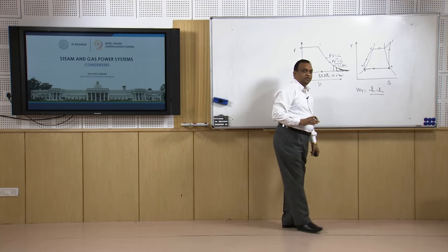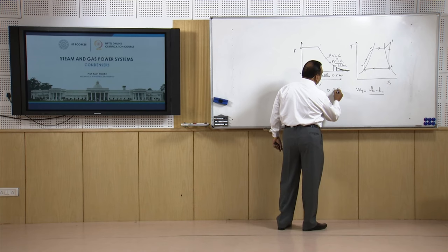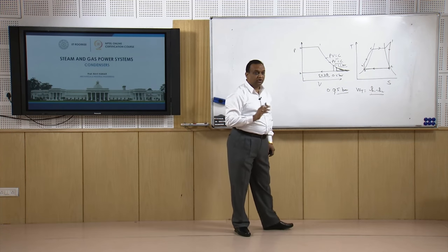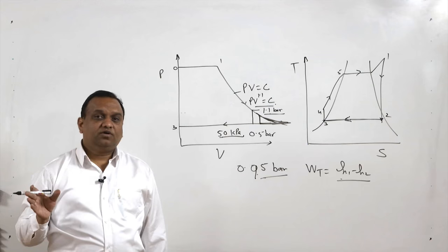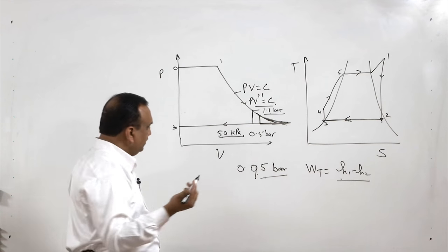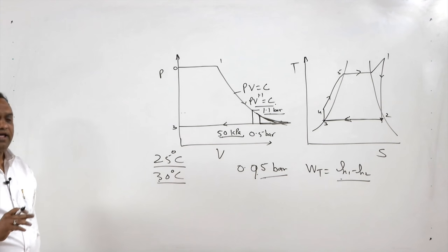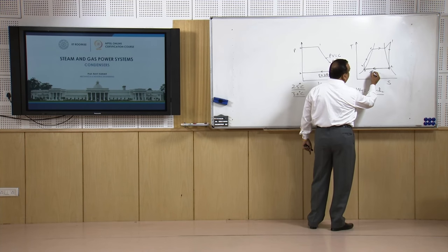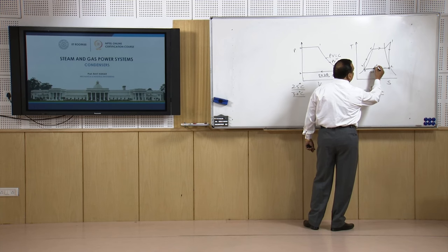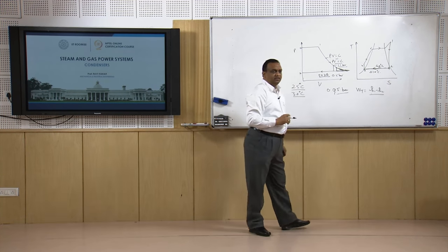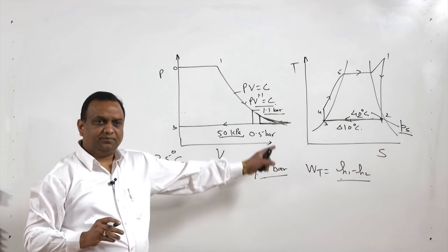Can we go to absolute vacuum? That is not possible. Even a vacuum of 0.05 or 0.95 bar is not achievable because in the condenser heat has to be removed. Normally in condensers heat is removed with water available at the site, typically at around 25 to 30 degrees centigrade, and a temperature difference of at least 10 degrees centigrade must be maintained. So the steam temperature should not be less than 40 degrees centigrade, corresponding to that saturation pressure to which we can expand the steam.